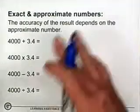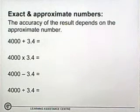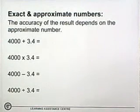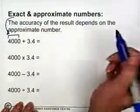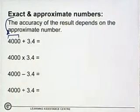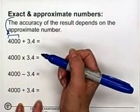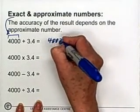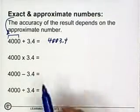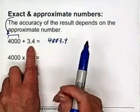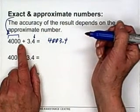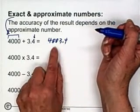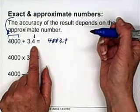When adding or doing calculations with exact and approximate numbers, our answer always has to have the accuracy of the approximate number. So let's say 4,000 is our exact number — we have exactly 4,000 pens or something — and we're going to add it to 3.4, giving us 4003.4. Our answer has to have the same accuracy as our approximate number. 3.4 has one decimal place, and 4,000 has no decimal places, so our answer has to have one decimal place.